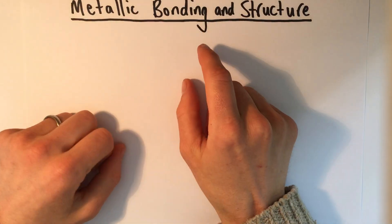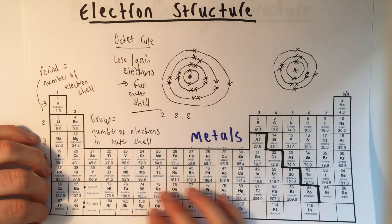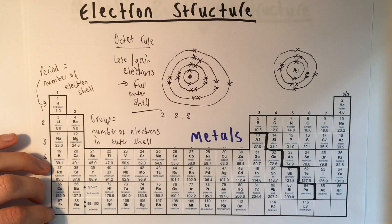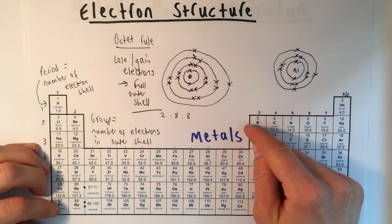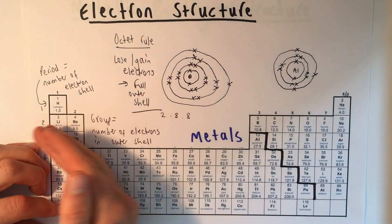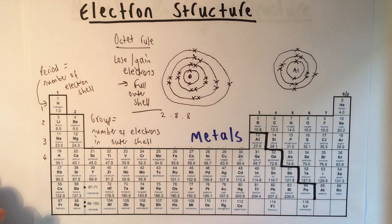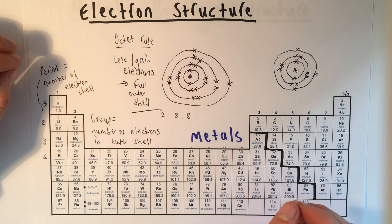This video is going to look at the bonding and structure of metals. Most of the elements on the periodic table are actually metals. Remember there's a staircase divide from the top of aluminium. Aluminium is on the metal side, so everything on the left of that is a metal. We make a lot of things out of metals, they're very common on earth, so it's useful to understand bonding in metals.